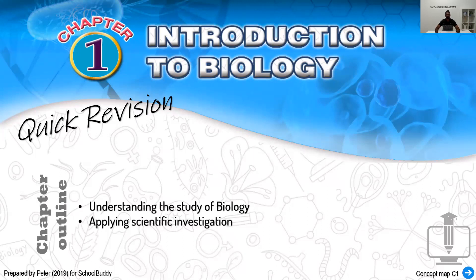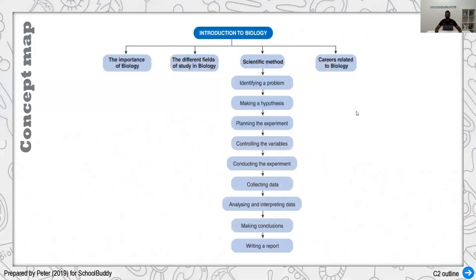We're going to go straight to the concept map. In this introduction to biology, biology refers to the study of living things. Whatever is living around us — be it an animal, a plant, humans like us — we are all living things, including things we can't see, such as microorganisms like bacteria, viruses, fungus, and all the parasites around us. These are all part of the study of biology.